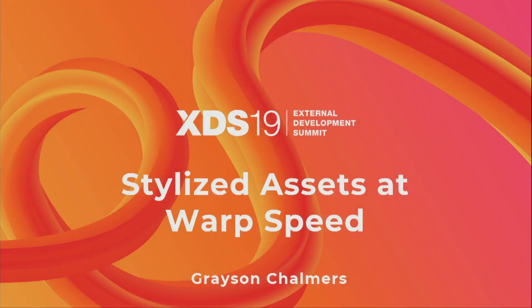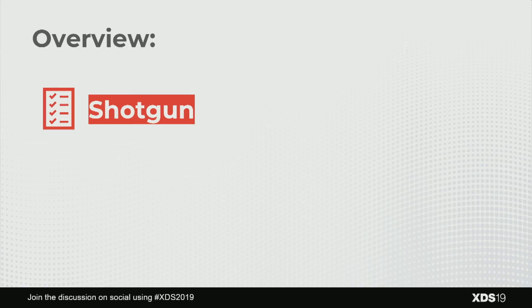Let's give a round of applause for Grayson. Hi everyone! Today we're going to be talking about stylized assets at warp speed. To give a quick introduction, we're going to be covering three topics. The first one — the meat of this — is going to be Shotgun. As Lois mentioned, we'll cover some tips and tricks from out-of-the-box Shotgun that will hopefully help speed up your process.